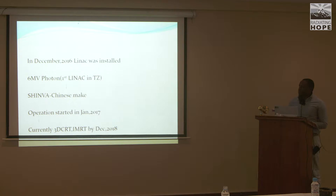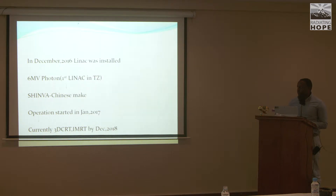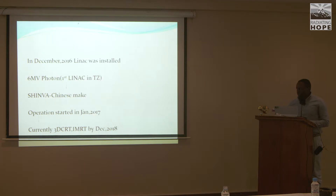It is a 6MV photon. It's actually the first linear accelerator in Tanzania, so I would say we are lucky to be the first people to use a linear accelerator. It's Chinese — the manufacturer is Shimva. The operation started in early January 2017.